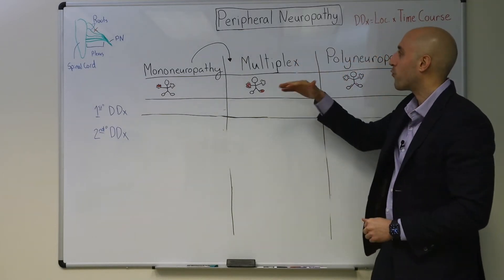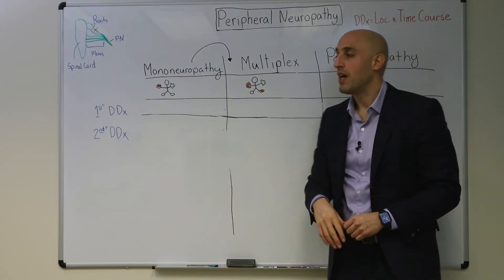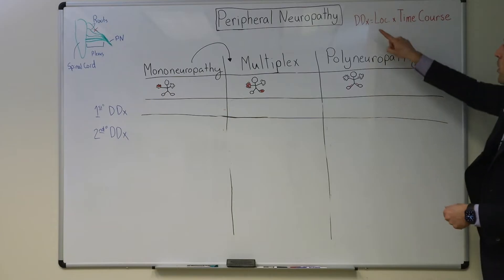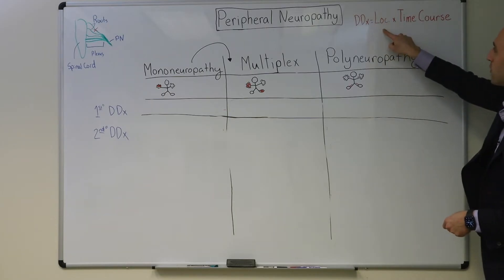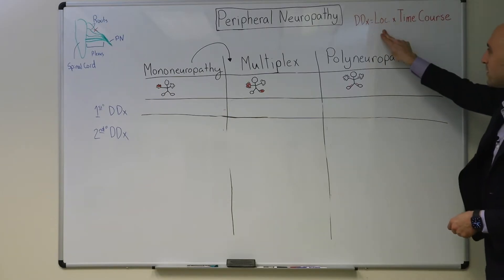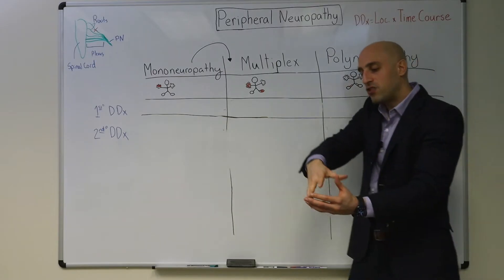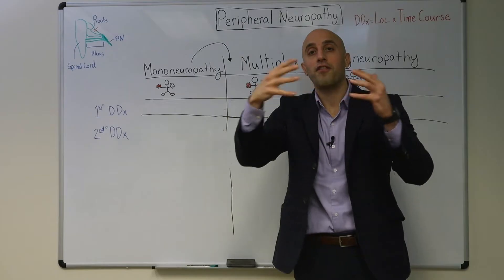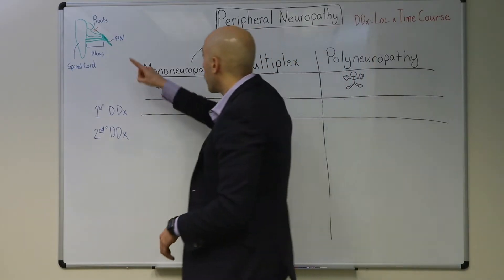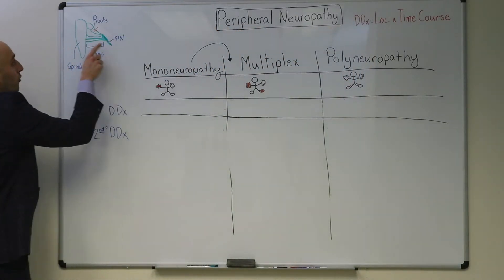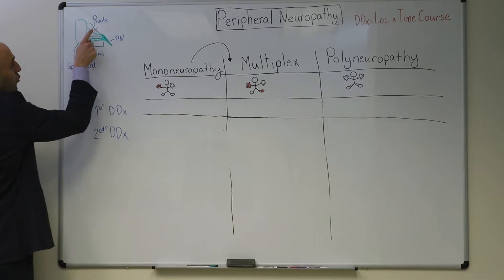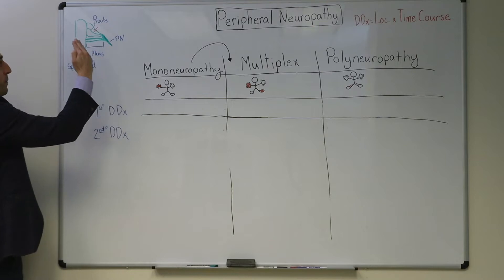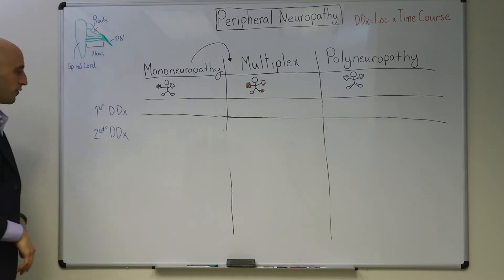Before we get into the three buckets of peripheral neuropathy, it'll be very helpful to discuss neuroanatomy. Remember, the neuro DDx is equal to localization times time course. So let's discuss neuroanatomy and zoom out from the peripheral nerves. The peripheral nerves are just one component of the peripheral nervous system. The peripheral nerves are derived from the nerve roots, the plexus, then the peripheral nerves — so it goes nerve roots, plexus, and then the peripheral nerves.